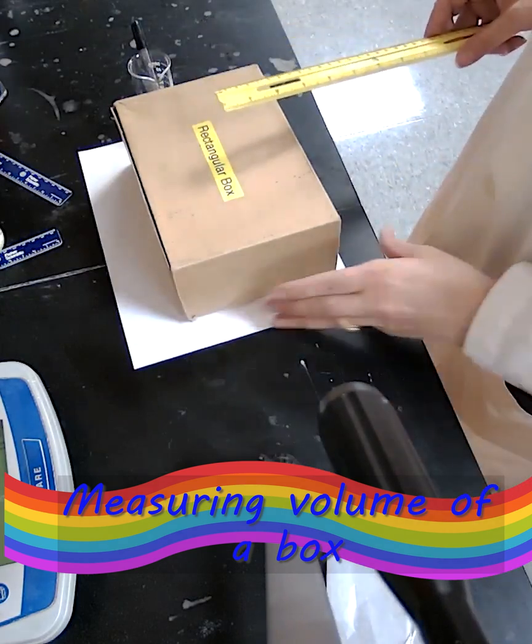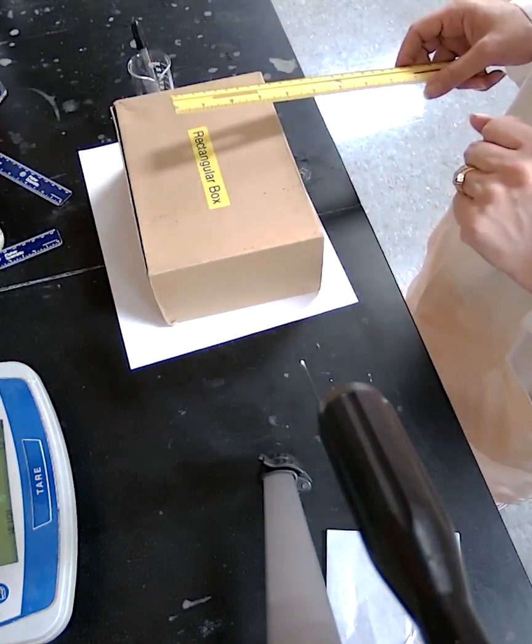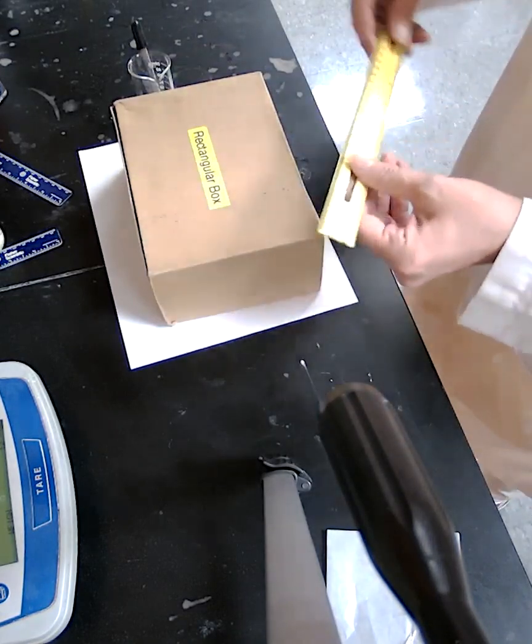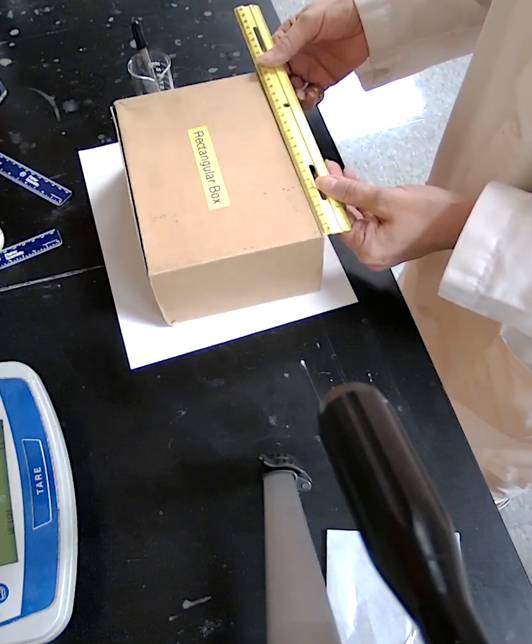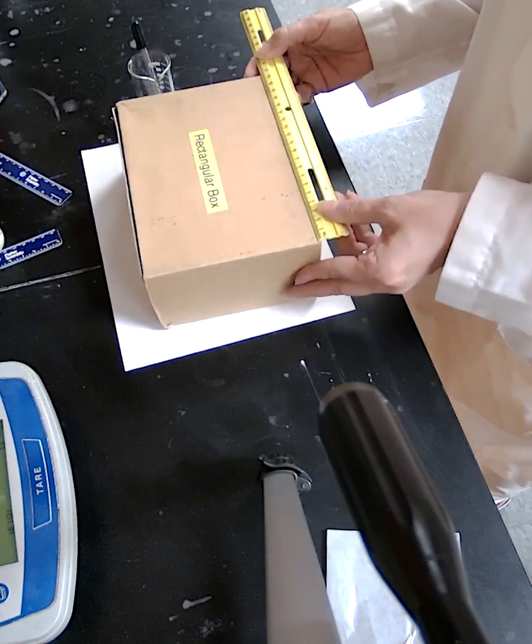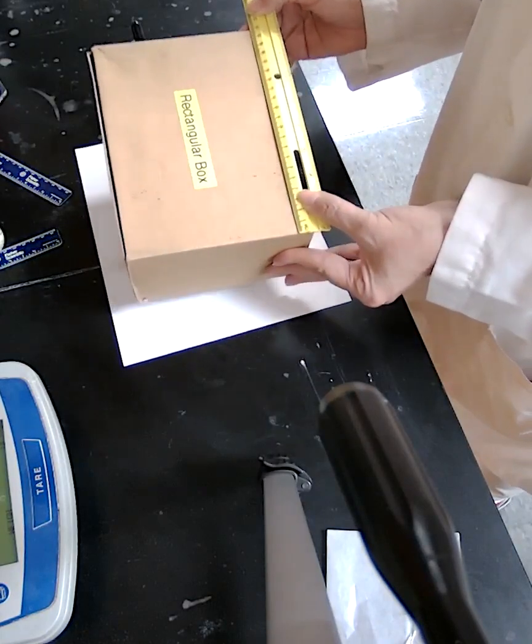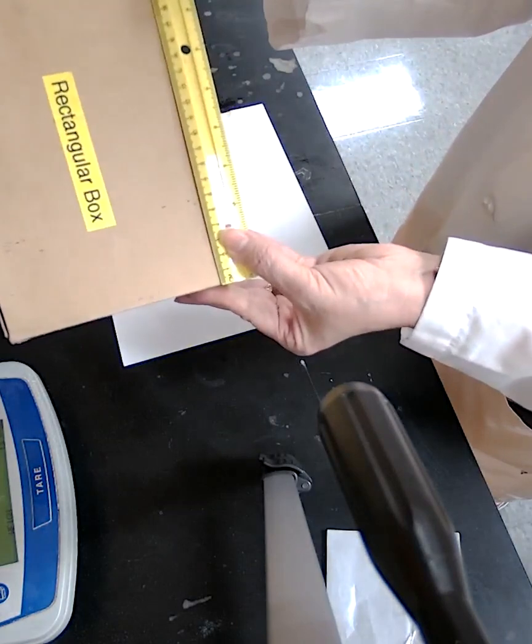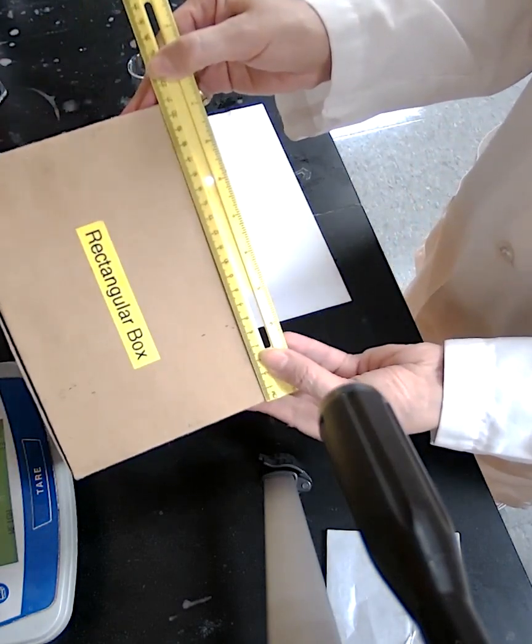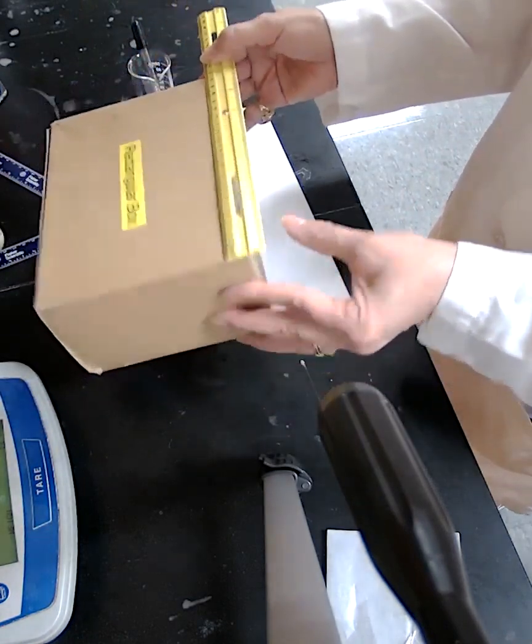To measure the volume of a regular shaped object like this box, measure the length, width, and height. Use the formula for the volume of a rectangular box: length times width times height. We can then calculate the volume. Pay attention to these measurements.